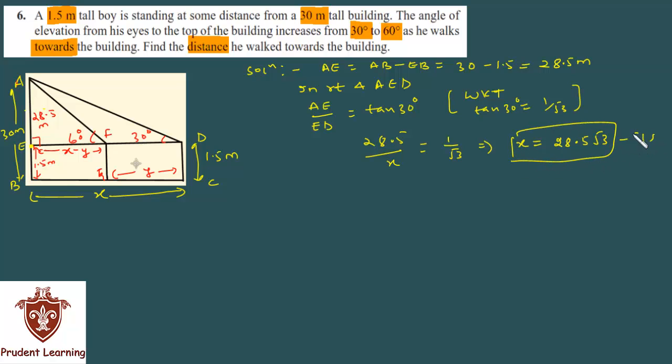Let's call this equation 1. x you found out is 28.5 root 3. What do you have to find? Finally, you have to find y. Now I will go to the smaller triangle.